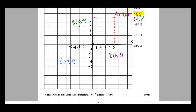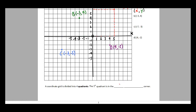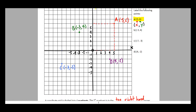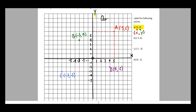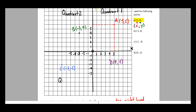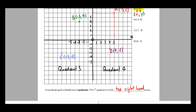The last thing to recognize is that a coordinate grid is divided into four parts called quadrants. The first quadrant is in the top right. Going counterclockwise: quadrant two is on the top left, quadrant three is on the bottom left, and quadrant four is on the bottom right. That's it for lesson 8.1.